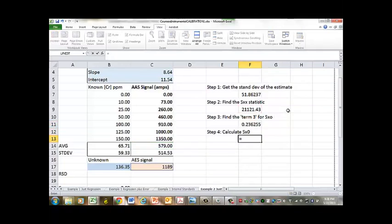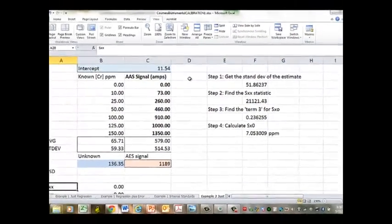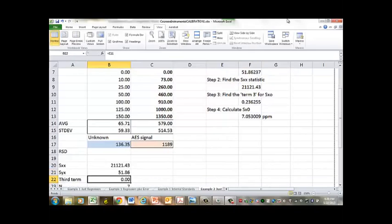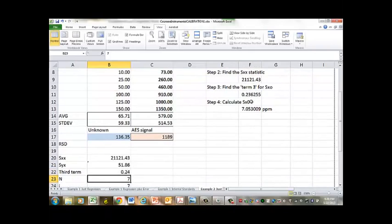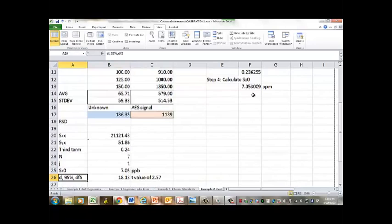Now I've got to calculate SX zero. And so, that's going to be the standard deviation of the estimate divided by the slope times 1, because we only have one measurement apparently, times 1 over the number of calibration experiments, which in this case is 7. And then plus our term 3, which is right here. There we have our SX zero. And this is going to be in units of ppm. Now, what I like to do when I do these is to make a table. So, down here we're going to have a table where I'm sort of reading in all of my calculations, because it's good to have them all in one place. And you can type them in here if you want. There's my SXYX. There's my third term. There's my number of measurements. Now, we're assuming we've only done one replicate. And so, our SX zero value is going to be given by this.